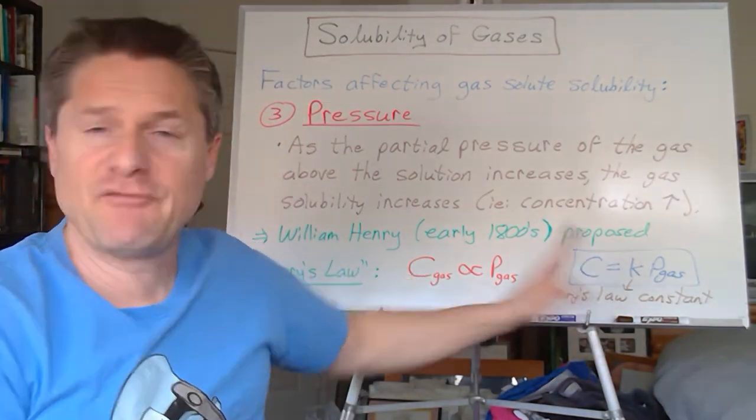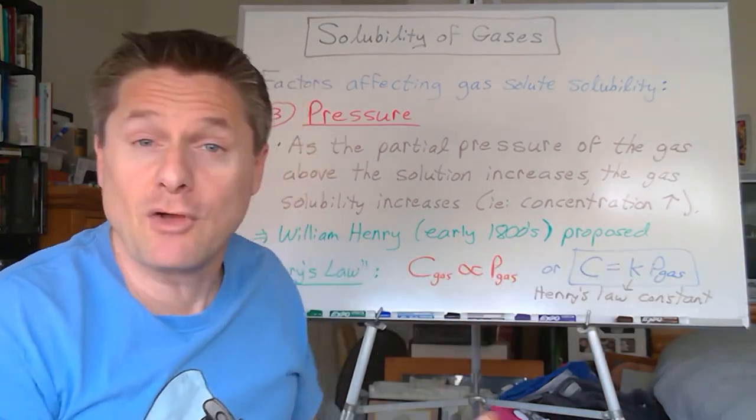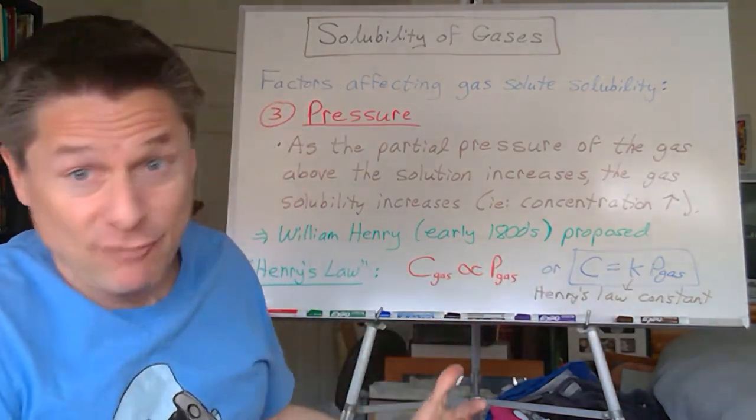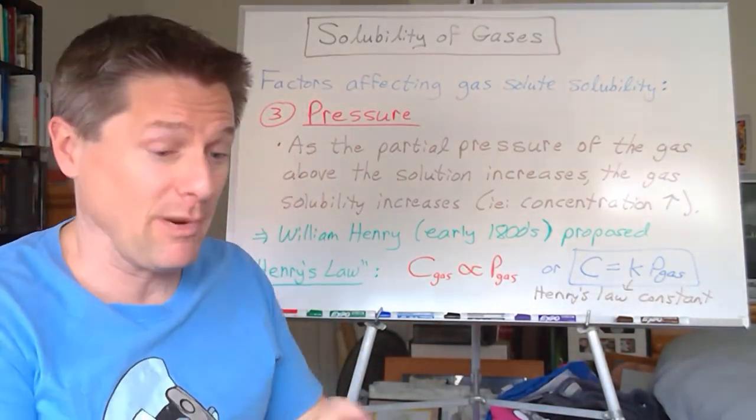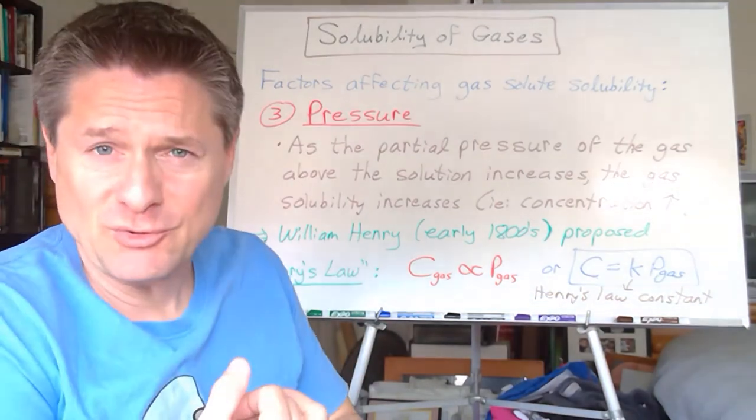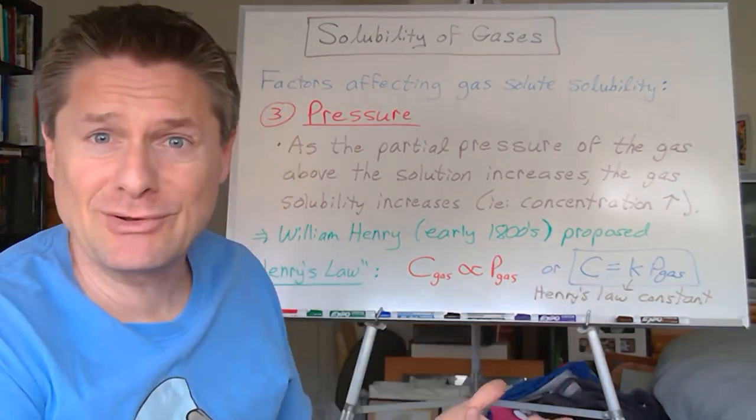And that would be just if you have a solution. If you know the concentration, and you know the partial pressure above it, you can solve for the Henry's law constant. You can have lots of different units, depending on the units of the pressure. Lots of pressure units. Bar, atmosphere, torr, pounds per square inch, kilopascals. Oh my gosh. Concentration units.